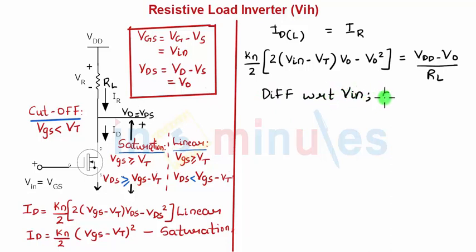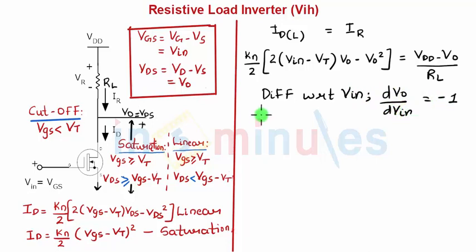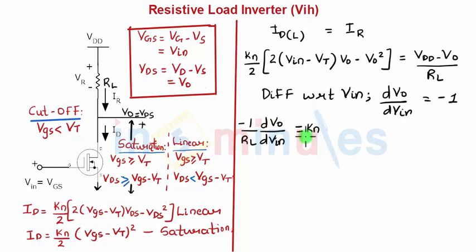Differentiating and setting dVout/dVin = -1, we get: (-1/RL) * (dVout/dVin) = (KN/2) * [...]